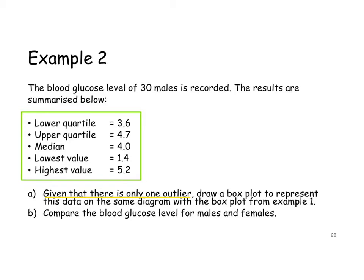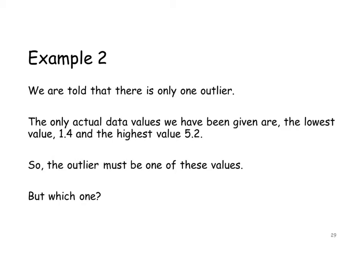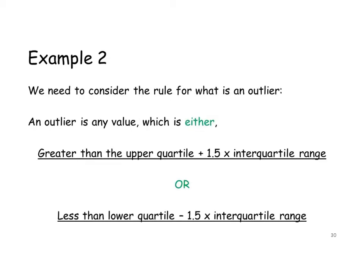We're told there is only one outlier. The only actual data values we have been given are the lowest value, 1.4, and the highest value, 5.2. So one of these values must be the outlier — but which one? To make that decision, we return to our rule for outliers: an outlier is any value which is either greater than Q3 plus 1.5 times the interquartile range, or less than Q1 minus 1.5 times the interquartile range.